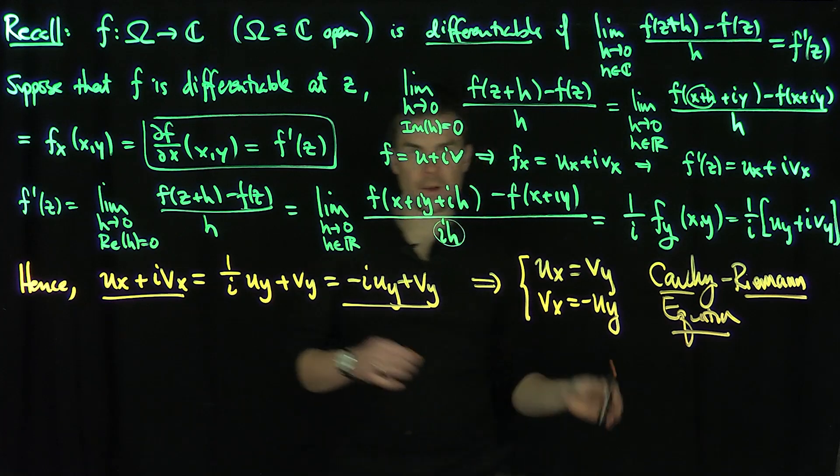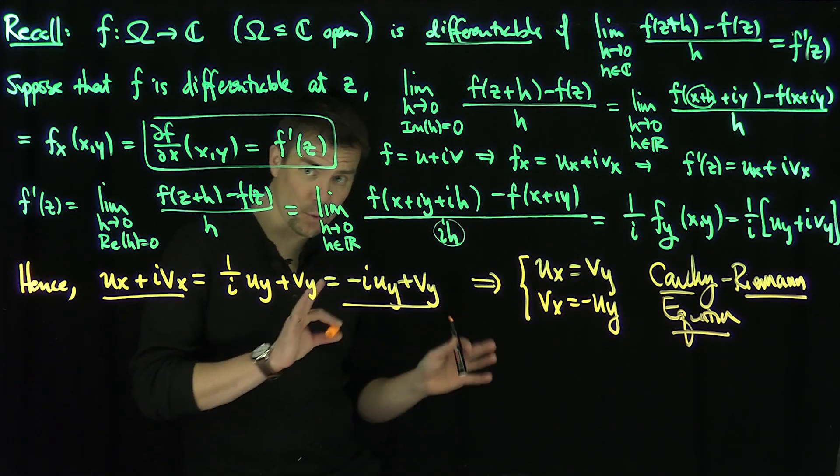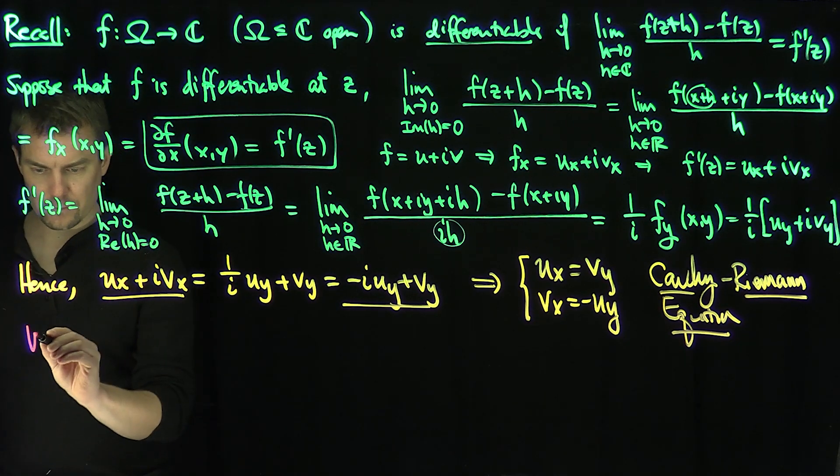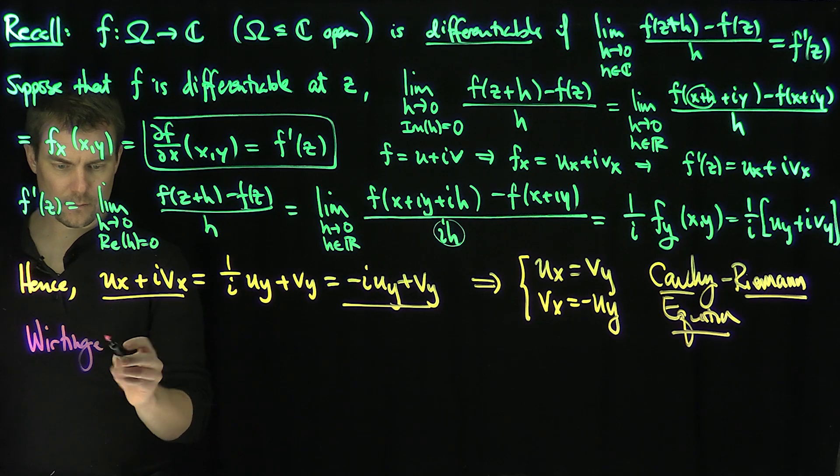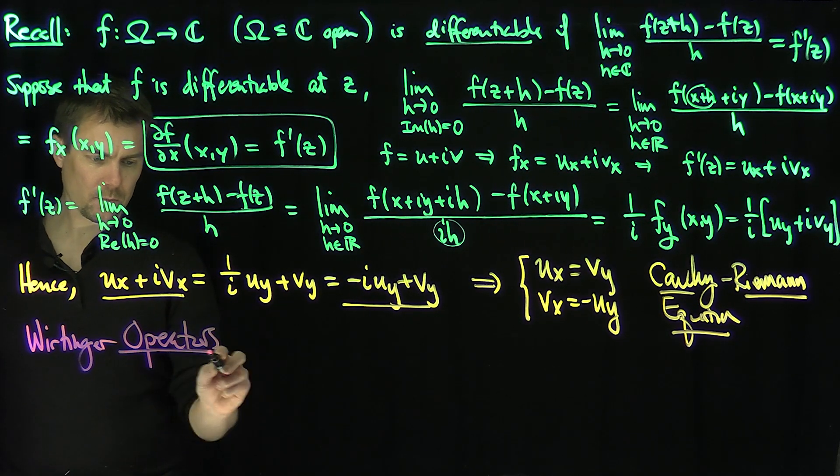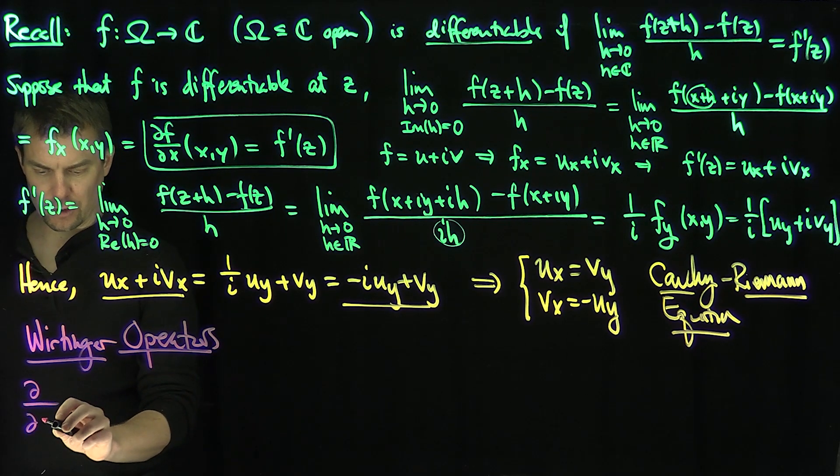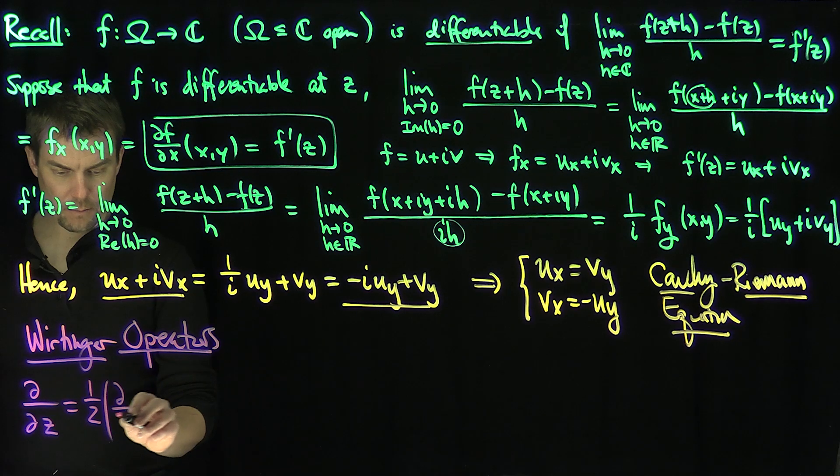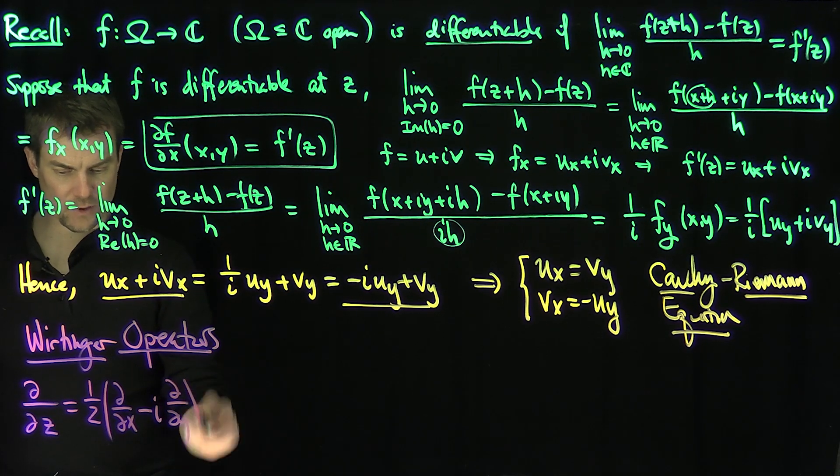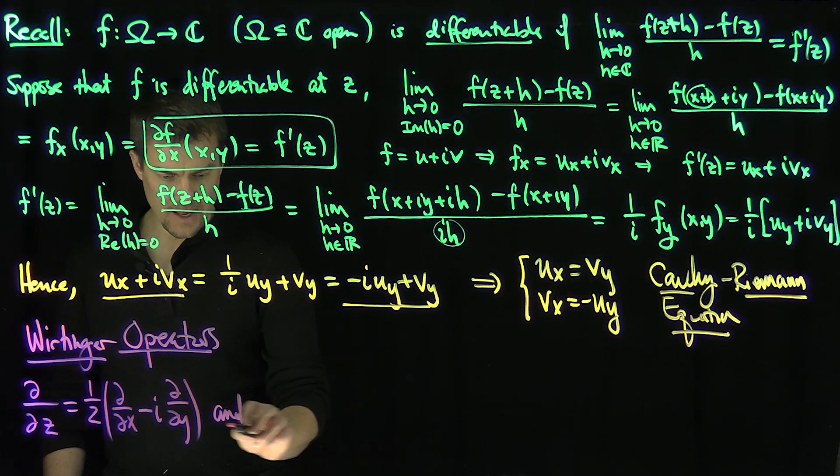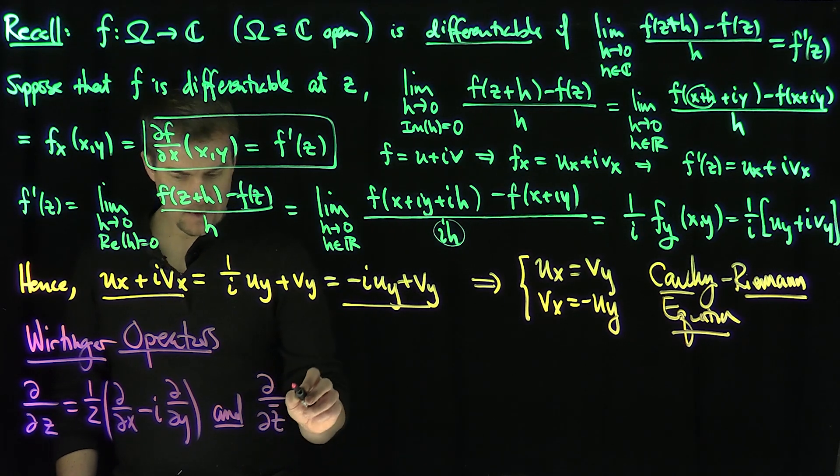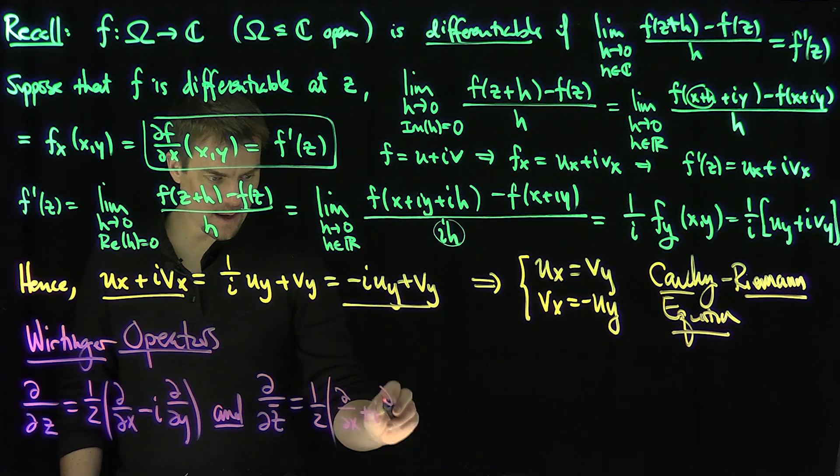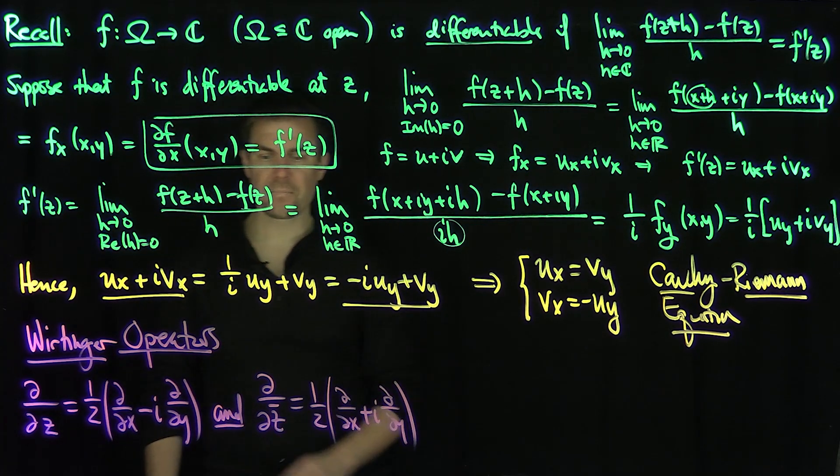Now I can recast things in terms of z and z̄ to understand the connection. I'm going to define two operators, the Wirtinger operators: ∂/∂z = (1/2)(∂/∂x - i∂/∂y) and ∂/∂z̄ = (1/2)(∂/∂x + i∂/∂y).